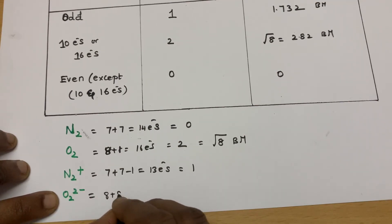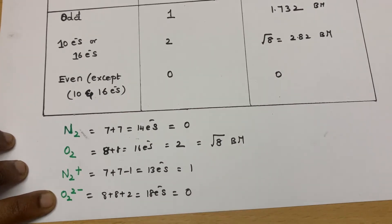For O2 minus, 8 plus 8 plus 2 is equal to 18 electrons. So it is even. So it will be 0.